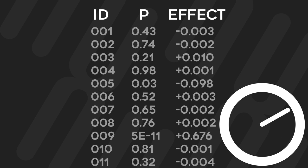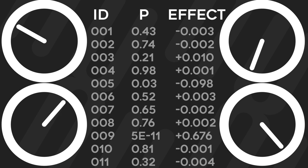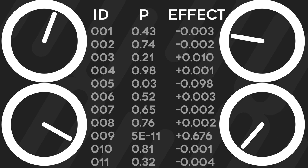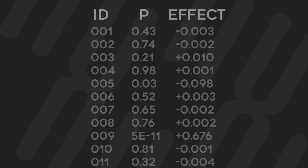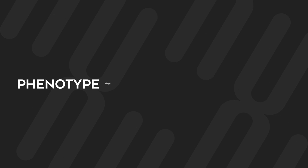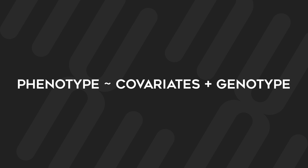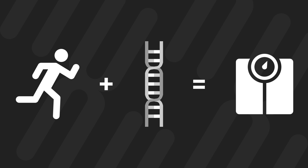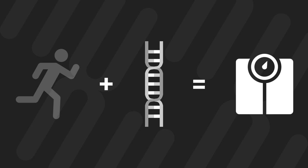Luckily, programs like Plink can take advantage of efficient processing, such as multithreading, to finish the analysis quicker. Furthermore, these programs allow for the addition of covariates, which are other traits that may affect the phenotype that is of interest. So, for example, the amount of exercise done weekly by a person certainly has an effect on BMI. If this information is present for the people in the dataset, the regression analysis can also account for the effect of this covariate when it computes the effect of the genotype alone.